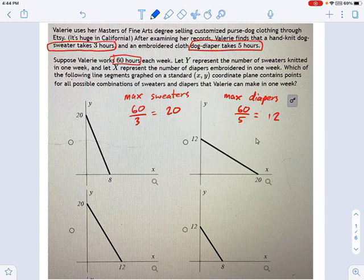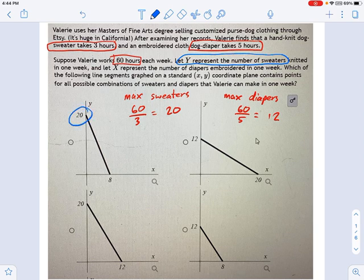Well, I'll use blue for this. Y represents the number of sweaters. Okay, so y equals 20. Here's one that works. Here's one that works. The others don't work.